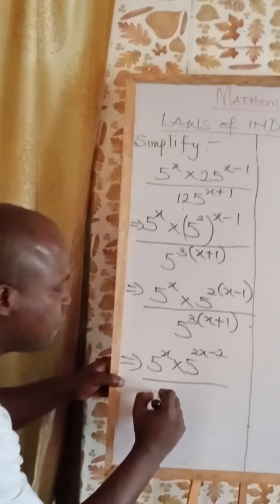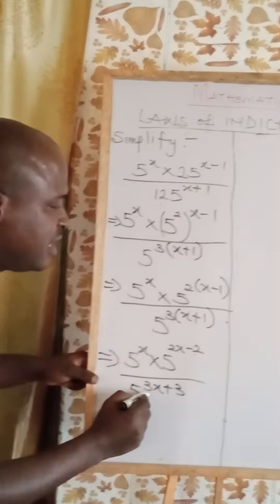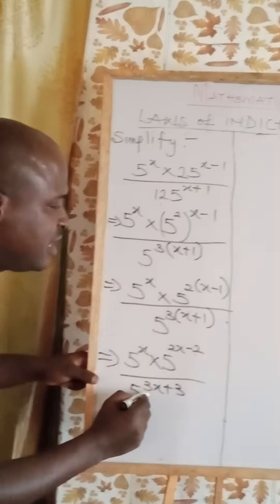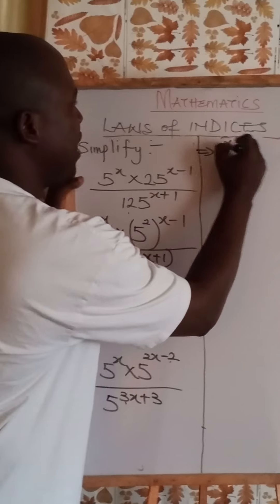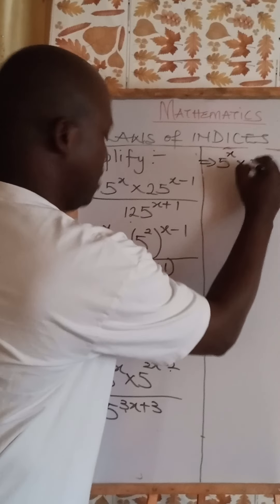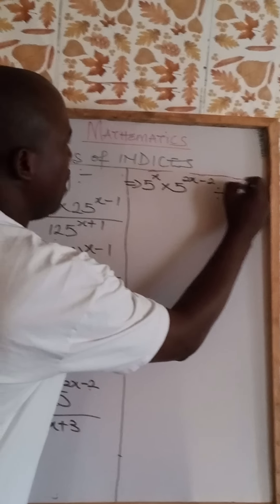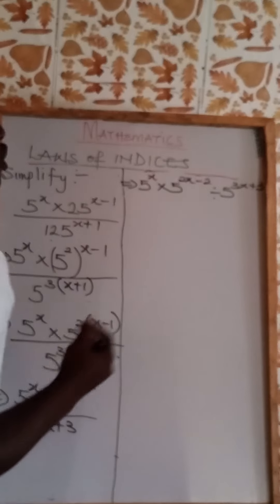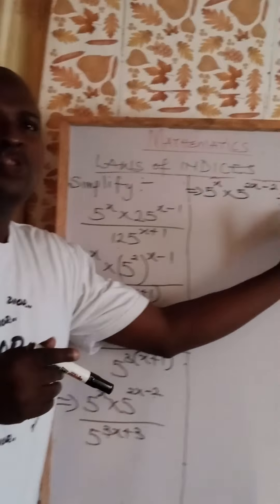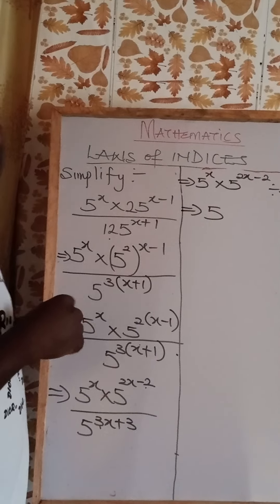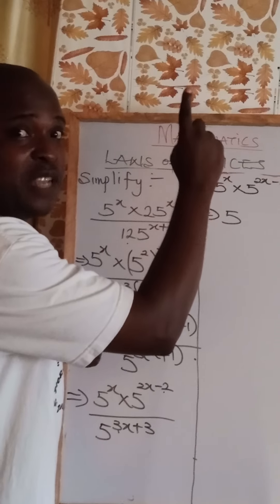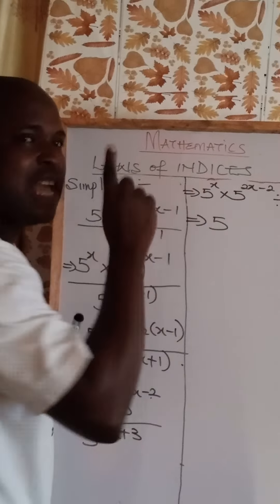From here we can open the bracket. We get 5 raised to the power of x, times 5 to the power of 2x minus 2 — because 2 times x is 2x and 2 times 1 is 2 — all over 5 to the power of 3x plus 3, because 3 times x is 3x and 3 times 1 is 3.